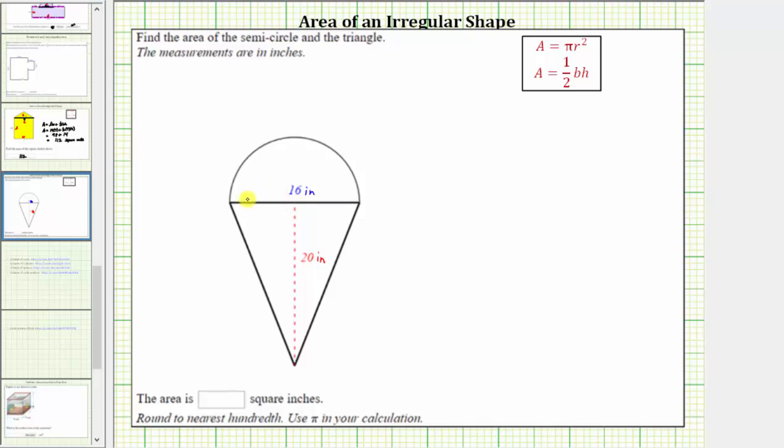Now if we focus on the semicircle, notice how this is half of a circle, and because the area of a circle is equal to pi r squared, the area of the semicircle is equal to 1/2 pi r squared, or pi r squared divided by two. And then the area of the triangle is equal to 1/2 base times height,